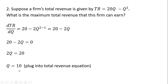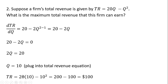20 divided by 2 is 10, so Q equals 10 is the level of output that maximizes total revenue. We're trying to find the dollar value of total revenue when it's maximized, so we plug 10 back into the total revenue equation. So 20 times 10 minus 10 squared gives us a total revenue of $100. That is the maximum dollar value of total revenue for this firm.